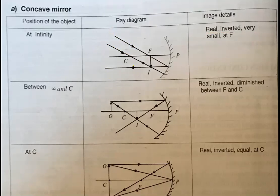Coming closer from infinity: if the object lies beyond C, the ray parallel to the principal axis after reflection passes through focus, and the ray passing through the center of curvature retraces its path. These two rays meet, forming an image that is real, inverted, and diminished, lying between F and C.